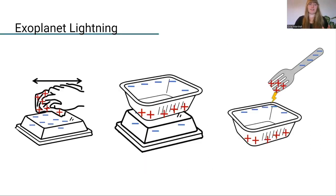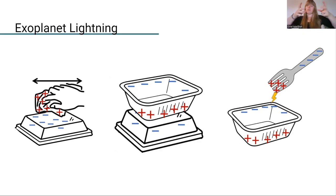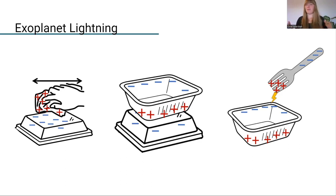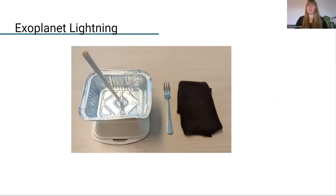The next one is the lightning experiment. The idea is to use a styrofoam container and wool — you rub them together to generate static electricity, then introduce a metal container on top and bring in a fork or similar implement to make the static discharge between them. It's often hard to see the electrical discharge, but you can usually hear it — which is actually the analogy for thunder. This has worked well in lessons so far, unless it's very humid. The materials are again super affordable and everyday.